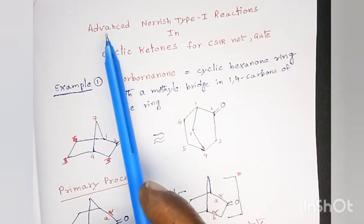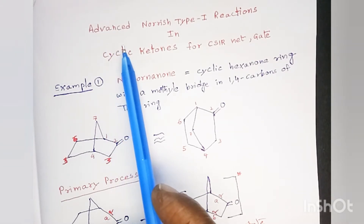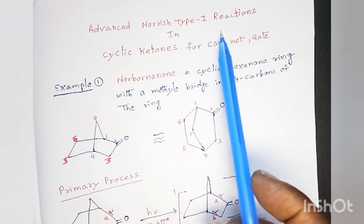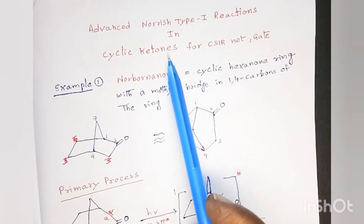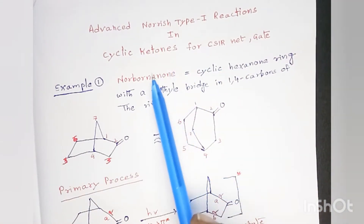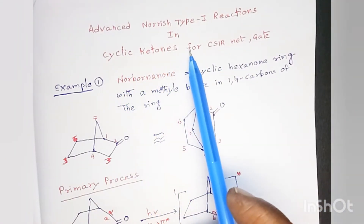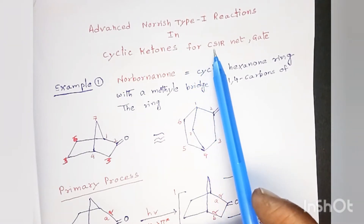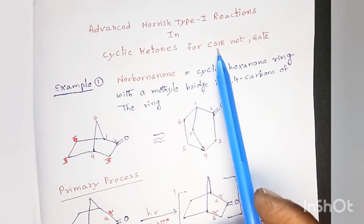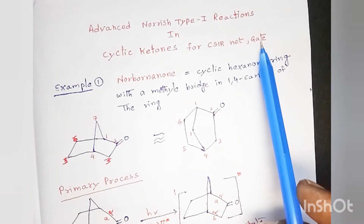Today let us learn about some advanced Norrish Type 1 reactions in cyclic ketones, which are useful for CSIR NET and GATE exams.